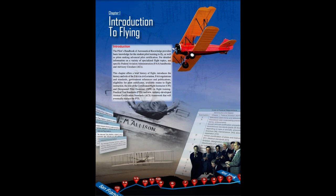This chapter offers a brief history of flight, introduces the history and role of the FAA in civil aviation, FAA regulations and standards, government references and publications, eligibility for pilot certificates, available routes to flight instruction, the role of the certificated flight instructor (CFI) and designated pilot examiner (DPE) in flight training, practical test standards (PTS), and new industry-developed airman certification standards (ACS), a framework that will eventually replace the PTS.